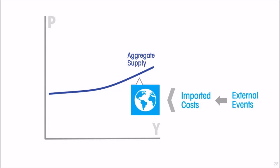We can reduce all costs of production to just these two components through a process of iteration. In the first instance, a business has labor costs, imported costs, and domestic inputs. But when you go to the suppliers of those domestic inputs, they too have labor costs, imported costs, and domestic inputs. Iterating further, you can eliminate domestic inputs, and ultimately it comes down to imported costs and labor costs.